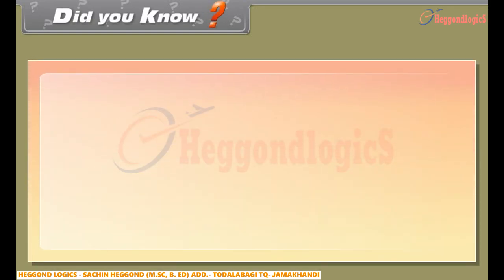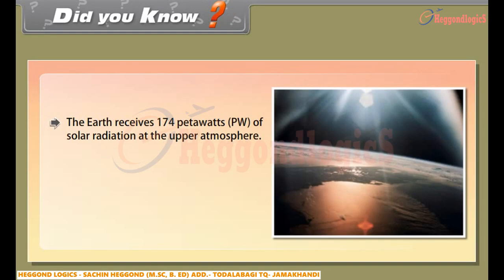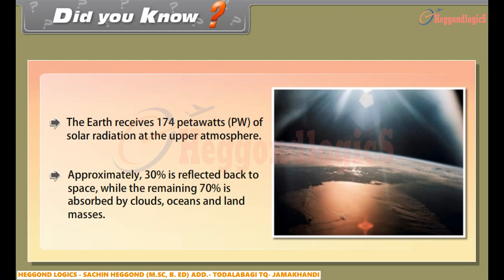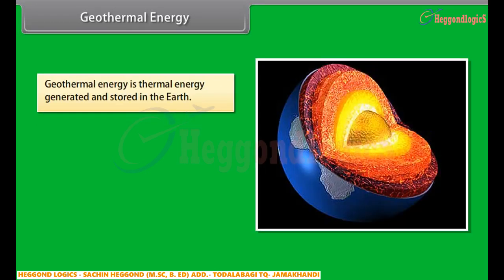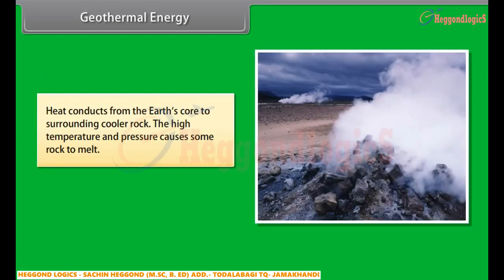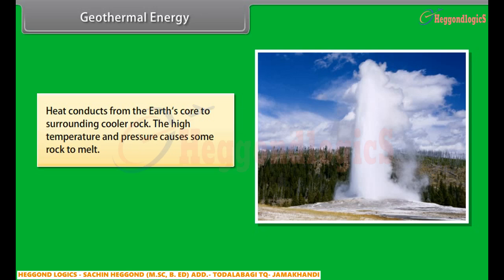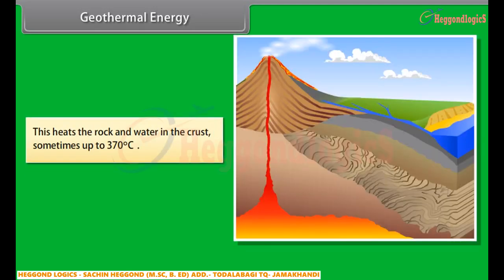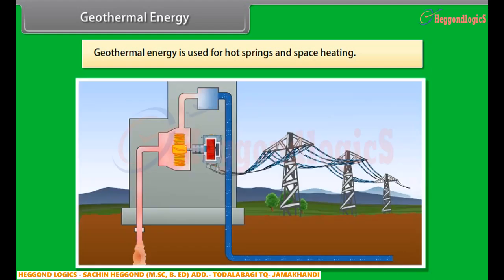Did you know? The earth receives 174 petawatts of solar radiation at the upper atmosphere. Approximately 30 percent is reflected back to space, while the remaining 70 percent is absorbed by clouds, oceans, and land masses. Geothermal energy is thermal energy generated and stored in the earth. Molten rocks are formed in the deeper hot regions of the earth's crust. Heat conducts from the earth's core to the surrounding cooler rock. The high temperature and pressure causes some rock to melt, heating rock and water in the crust sometimes up to 370 degrees Celsius. Geothermal energy is used for hot springs and space heating.